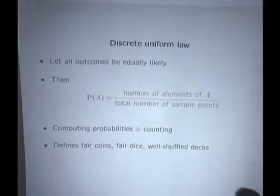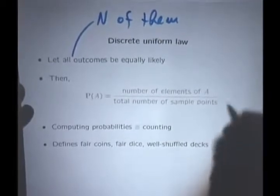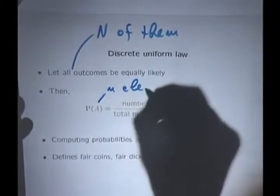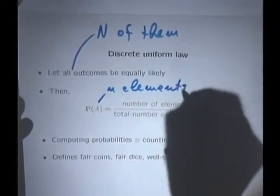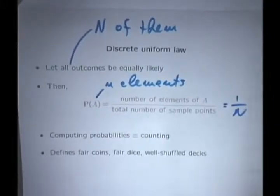But when things are that way, if all outcomes are equally likely and we have n of them, and you have a set A that has little n elements, then each one of those elements has probability 1 over capital N, since all outcomes are equally likely.